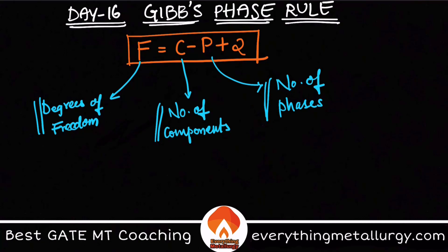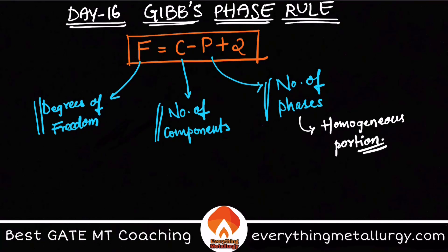What is a phase? A phase is a homogeneous part or homogeneous portion of my system. The famous definition states: chemically homogeneous, physically distinct, and mechanically separable. These three characteristics define what we call a phase. You can have many types — solid, liquid, gas — these are all different kinds of phases.